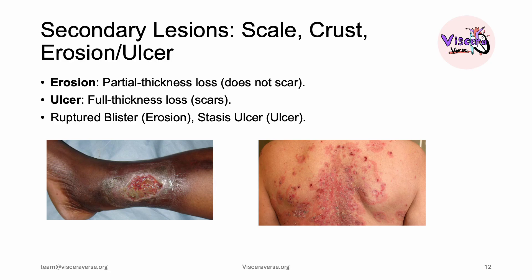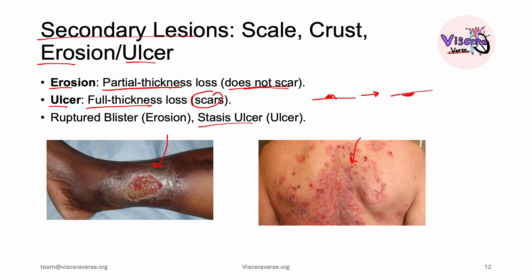Another high-yield example of secondary lesions are erosions and ulcers. A blister — a bulla or vesicle — can be flaccid and rupture, leading to an ulcer or erosion. The difference between an erosion and an ulcer is the depth: an erosion has only partial-thickness loss while an ulcer has full-thickness loss. A venous or stasis ulcer is a typical example of an ulcer, and when it heals it leads to a scar. Erosions, as seen in pemphigus vulgaris, do not lead to scarring.